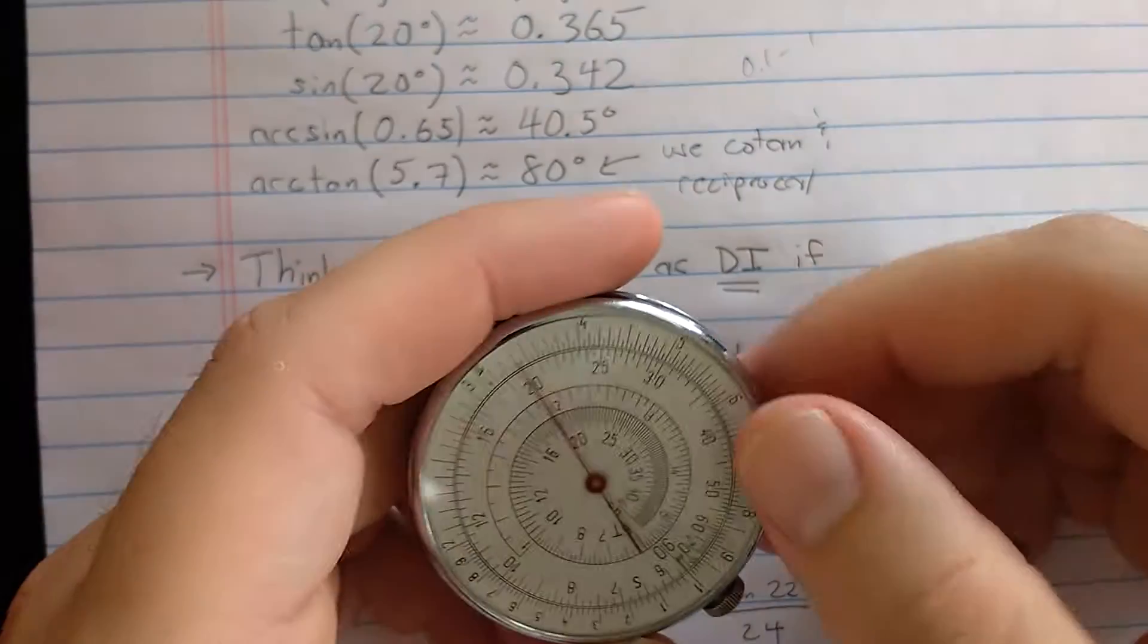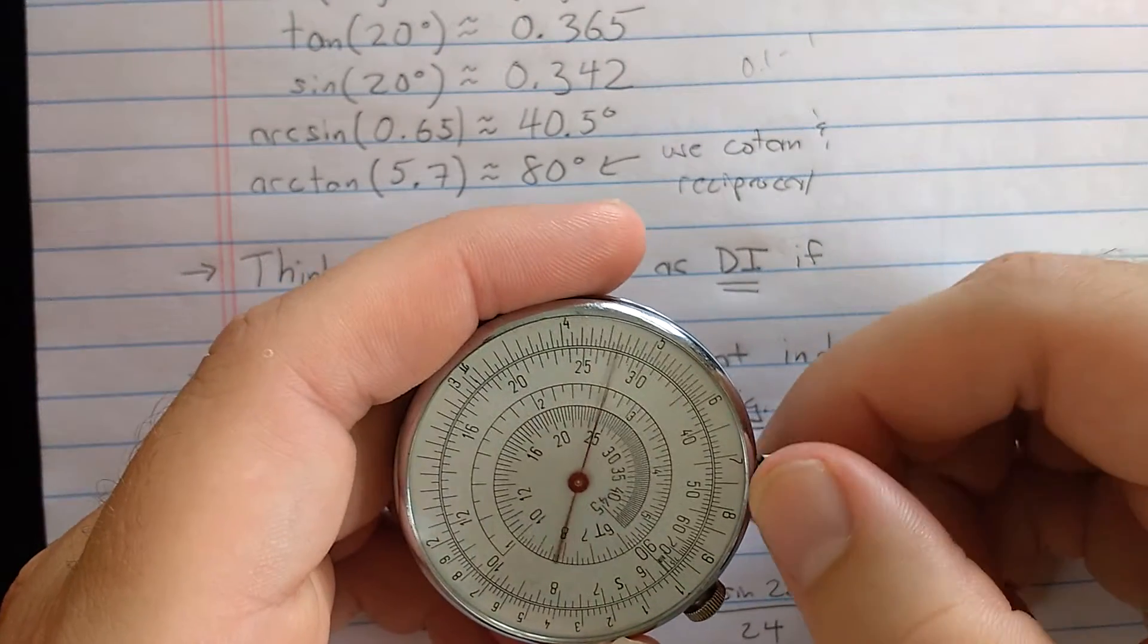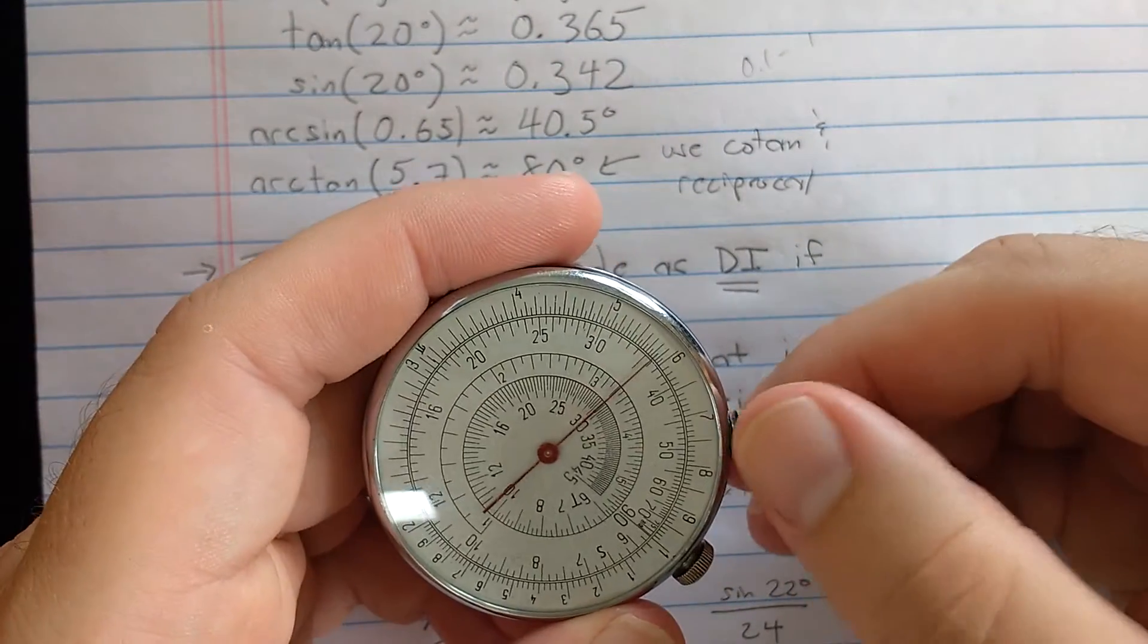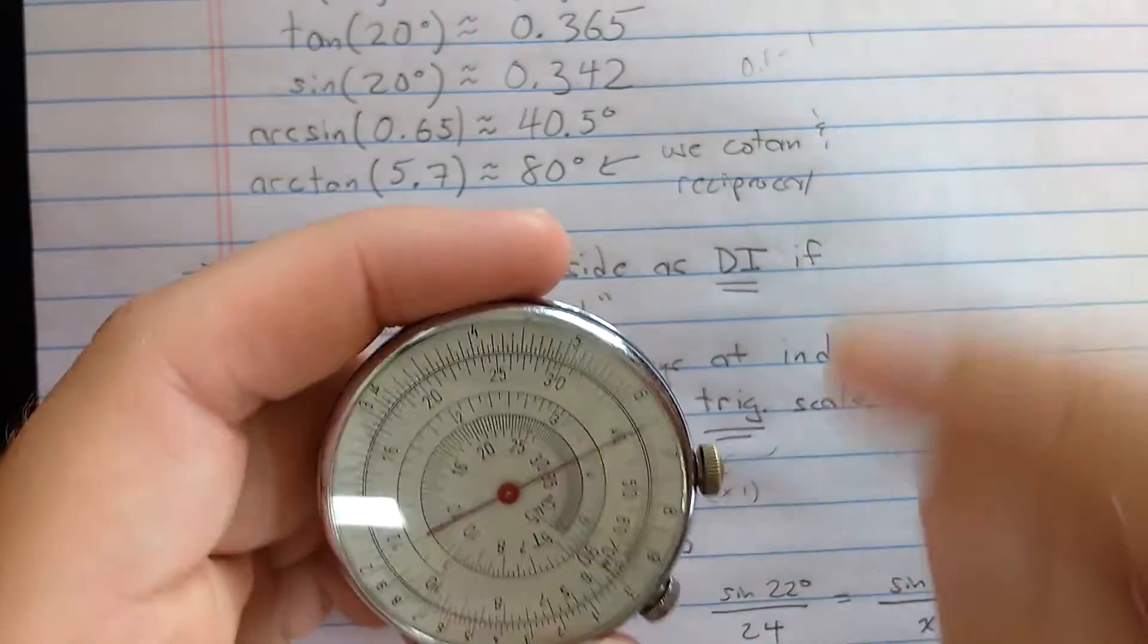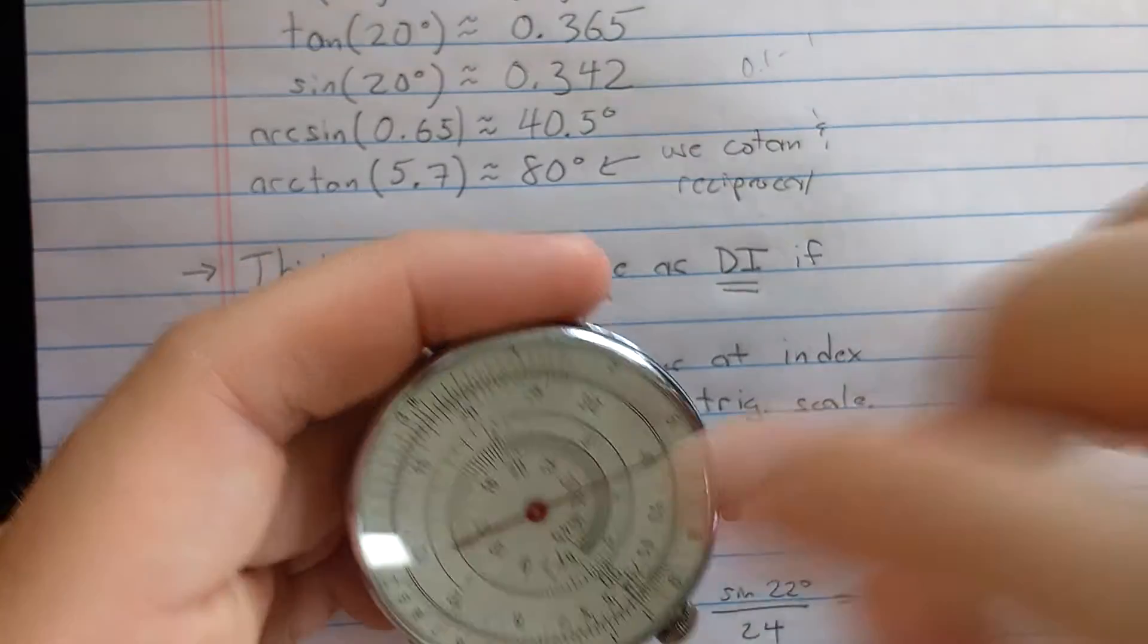Now you could do inverse trig by finding the sine first. Let's find 0.65 on the outer scale, and then read about 40.5 on the sine scale.